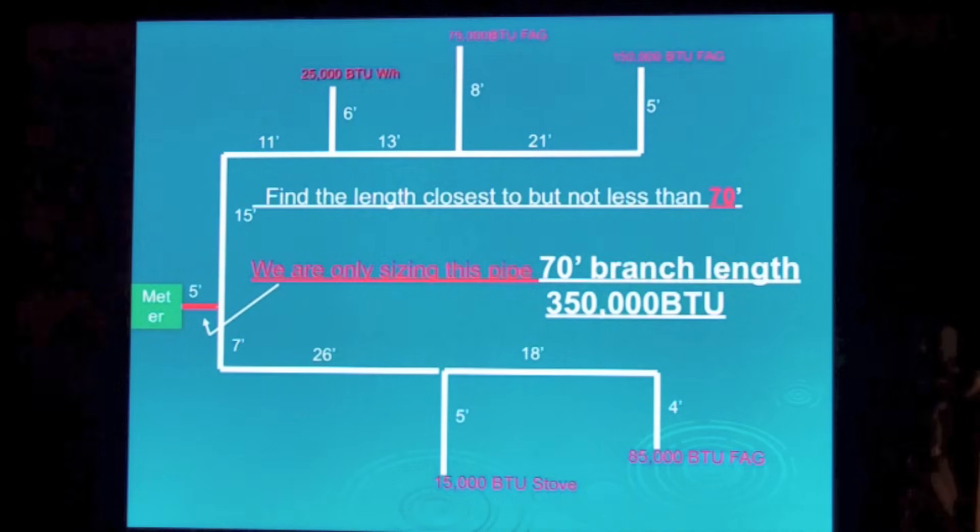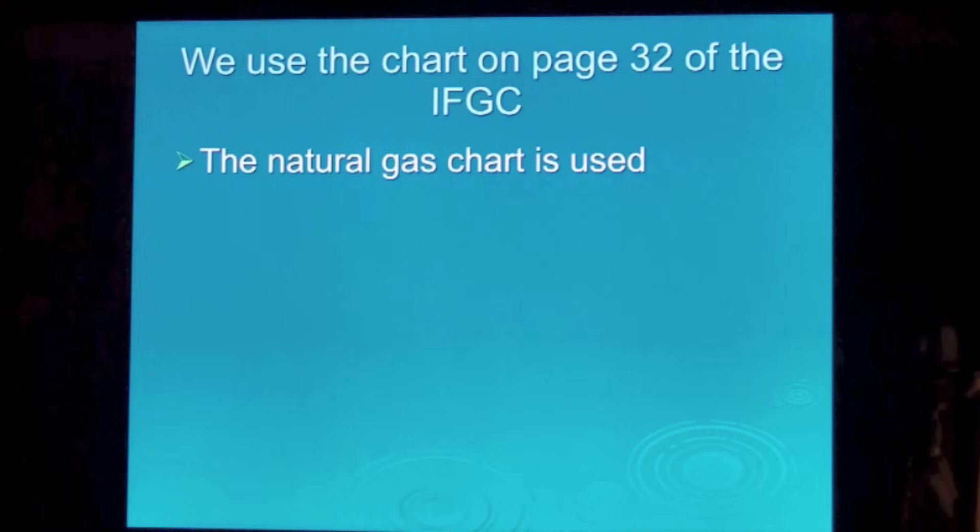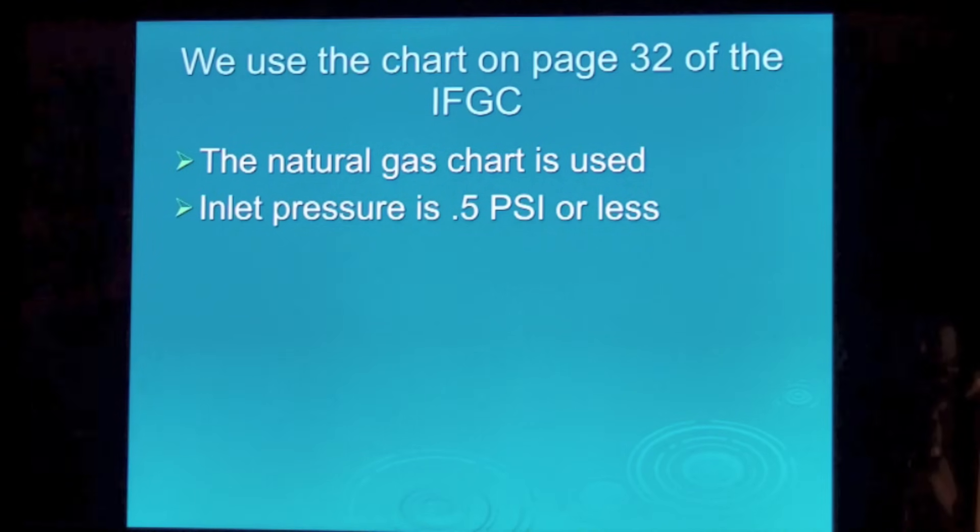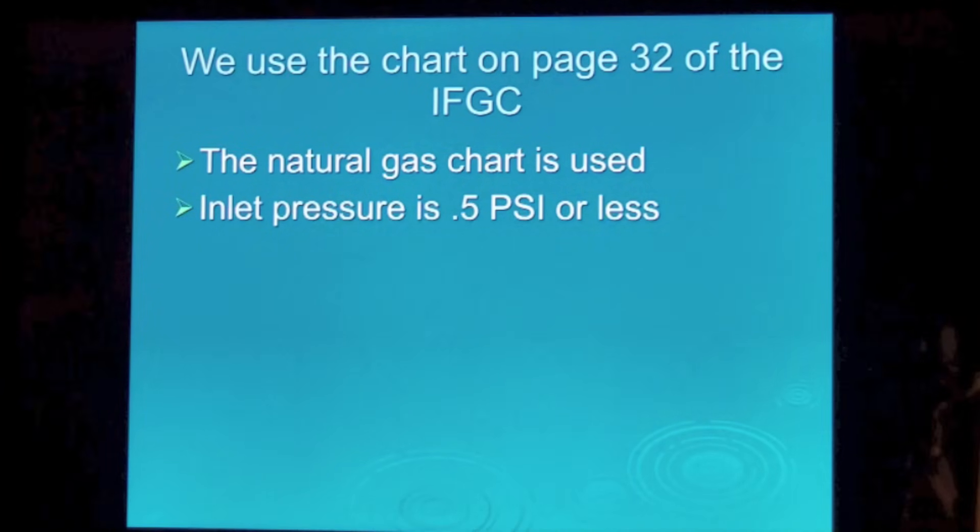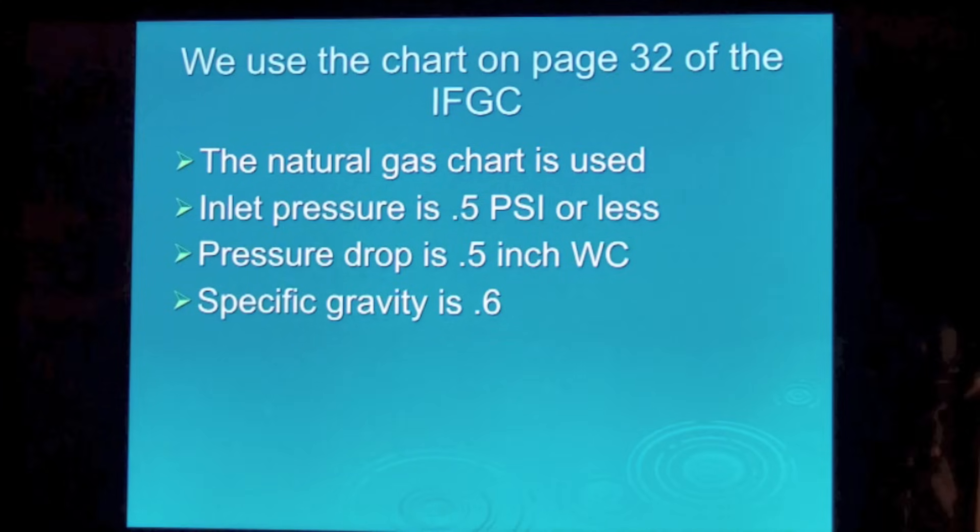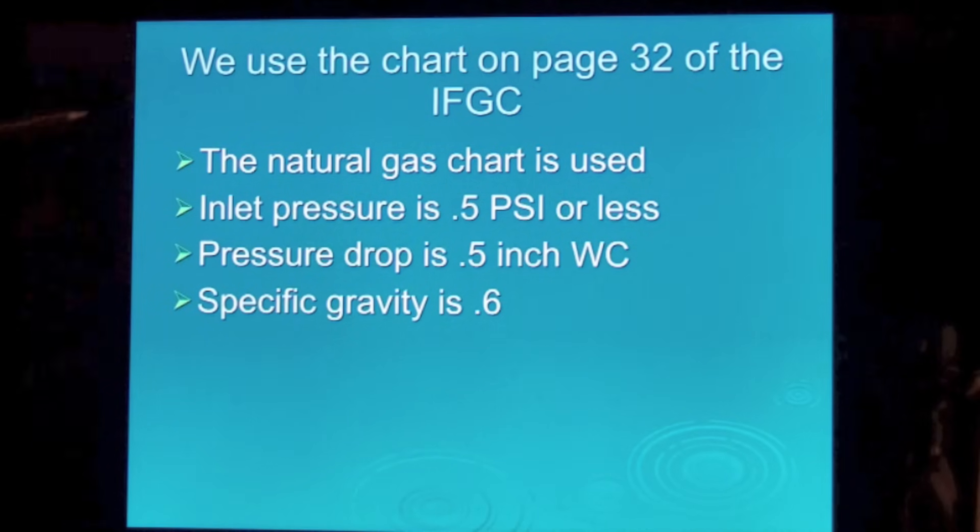Find the length closest to but not less than 70 feet. We're going to use a chart and it's on page 32 of the fuel gas code. You're using natural gas, not sizing for propane. In our area the inlet pressure is half an inch PSI or less. Ours is actually seven inches water column or a quarter PSI. The pressure drop is five tenths of an inch water column. And the specific gravity of the fuel is 0.6. These are all things you need to find the correct chart.